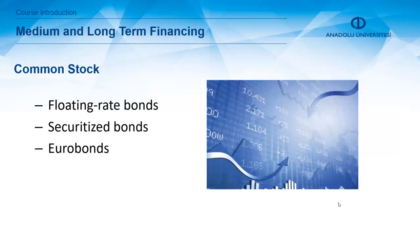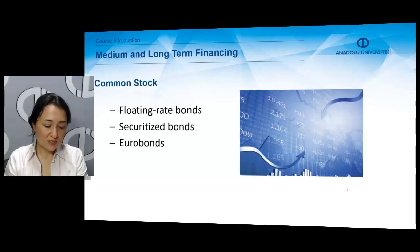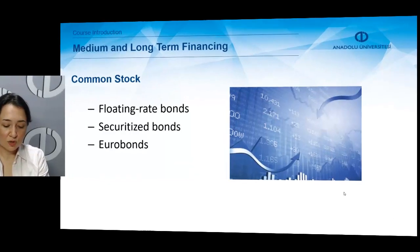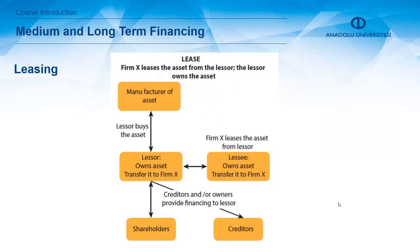We also have common stock. In order to decide about the optimal capital structure, the corporation should evaluate the alternative of common stock issuance. Common stock issuance is costly, so companies need to decide whether to use it or not. We can also talk about the advantages and disadvantages of common stock.